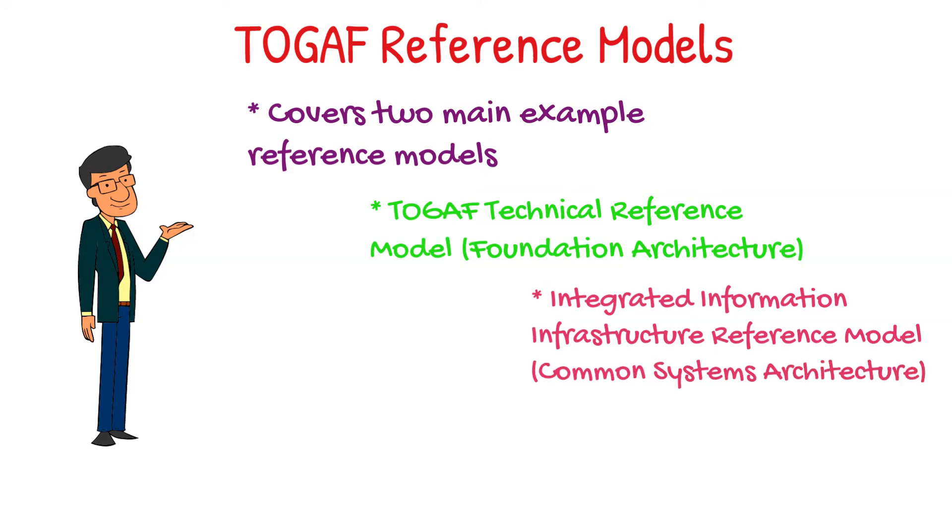When dealing with architecture, there are four levels typically addressed: foundation architecture, common systems architecture, the industry-specific architecture, and the organization-specific architecture.